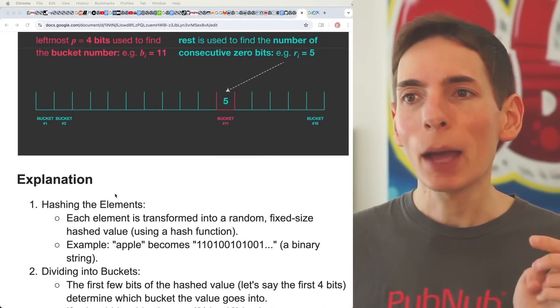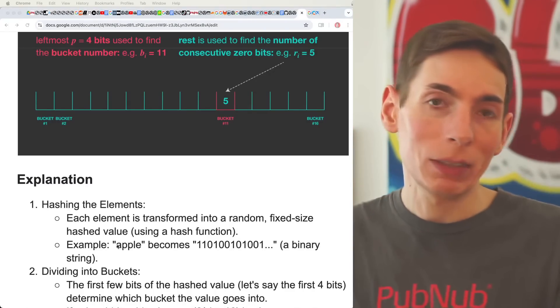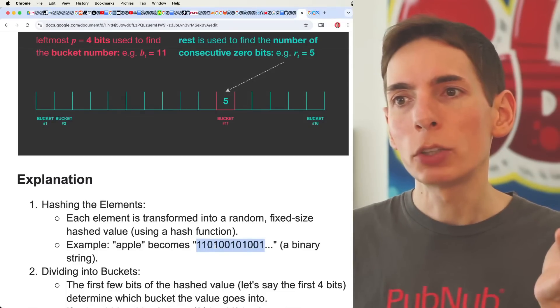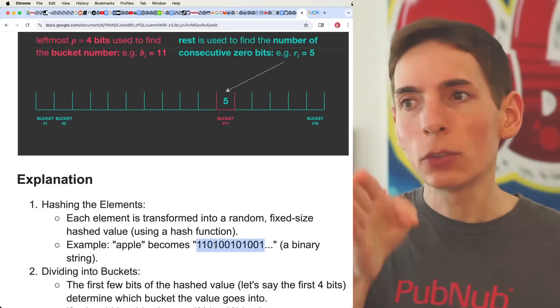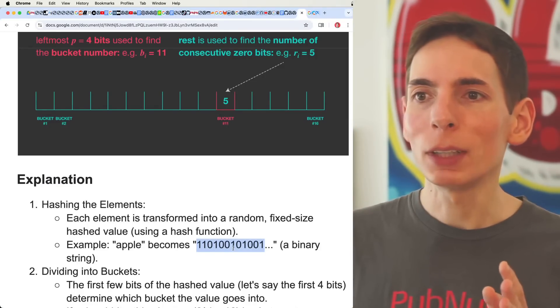Because apple... You hash the string, the element itself, into a binary string, which all hashes do. They hash a string into a binary string. And so you get a whole bunch of ones and zeros. Perfect, excellent, and that's what we need.